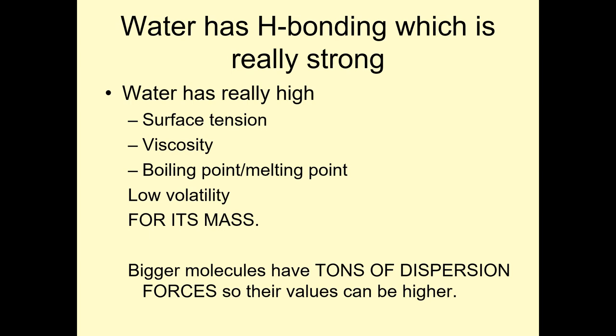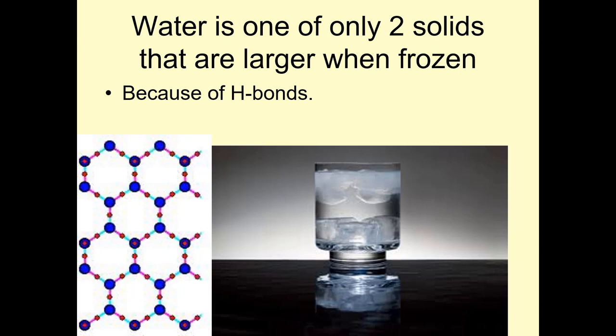Water has H bonding, which is really strong. So if H bonding is really strong, it has a high surface tension, high viscosity, a high boiling point. That's going to have a low volatility for its mass. Now this is important. That's for its mass because other things have higher values. But for its mass is the best. Bigger molecules have tons of dispersion forces, so their values can be higher. That means I can have more money from pennies than you can have from $20 bills. Bring me the pennies. And there's a coin shortage. Dunkin' Donuts tells me this. So I'm living large.